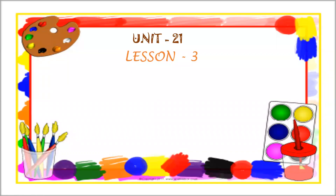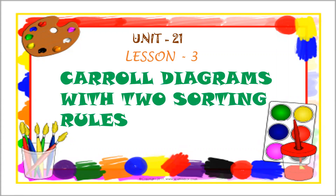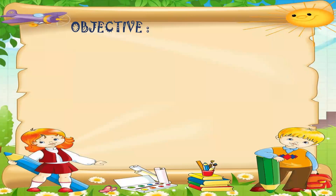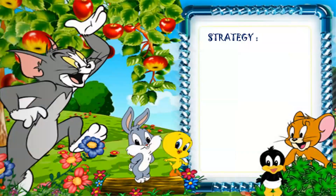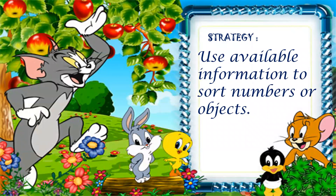Good morning dear students. Welcome to Math Zoom lesson. Today we are going to revise Unit 21, Lesson 3: Cattle diagrams with two sorting rules. Use cattle diagrams to sort numbers or objects using two criteria. Use available information to sort numbers or objects.